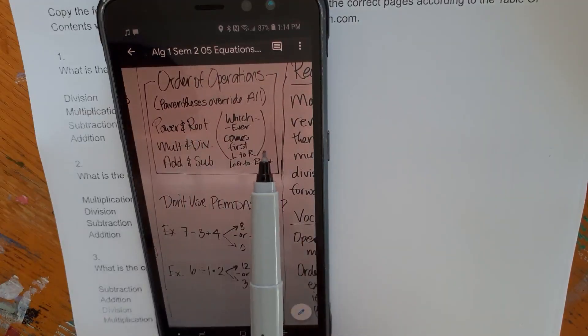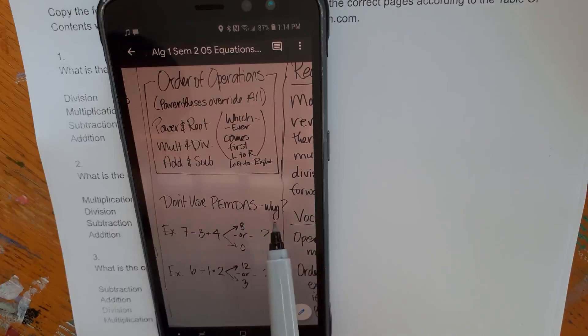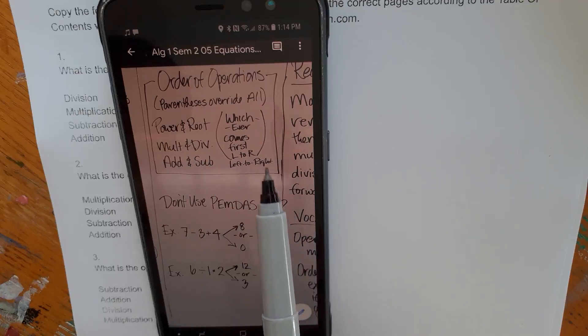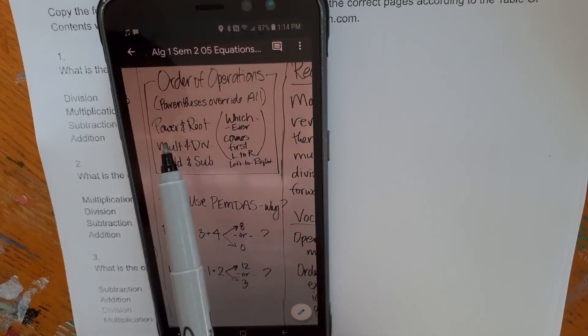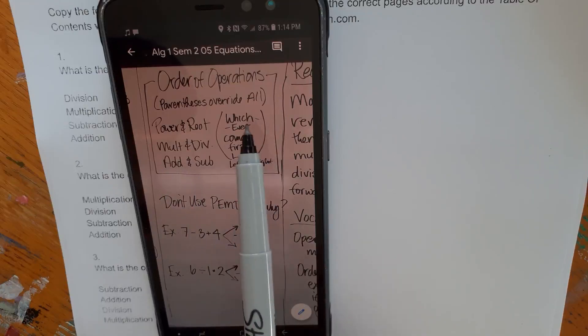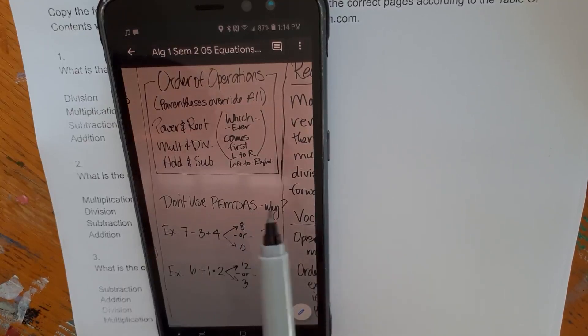Now we talk about order of operations. I would prefer you not use PEMDAS, but I would prefer you use an understanding. That's a lot more complicated, I agree at first, but it will not lead you astray like PEMDAS does. So parentheses overrides all. Power and root comes first. Multiplication and division next. Addition and subtraction next. You're going to go left to right, whichever comes first. Follow that order. I'll show you the problem with PEMDAS.